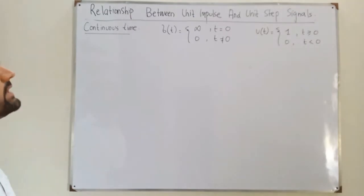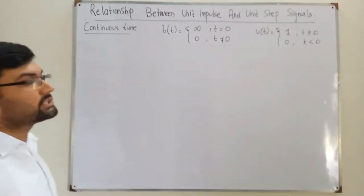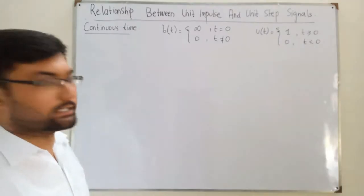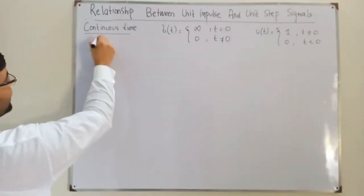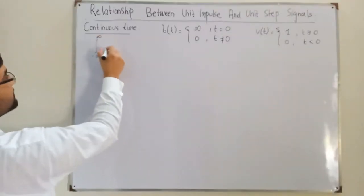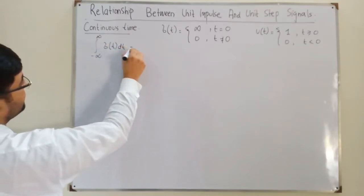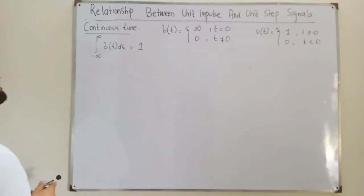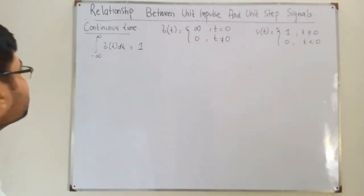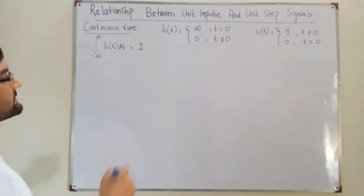A very important property of the unit impulse function is that the area under its curve is always unity. So if you integrate it from negative infinity to positive infinity — the integral of delta(t) dt — this always equals 1.